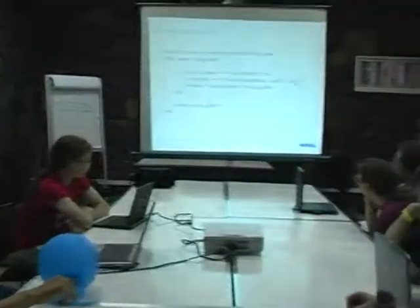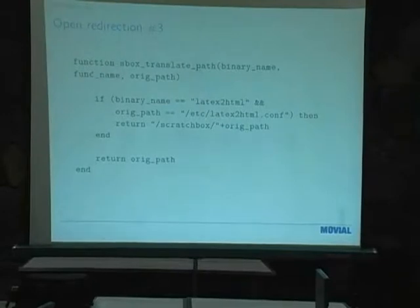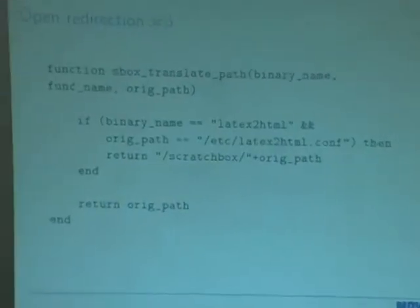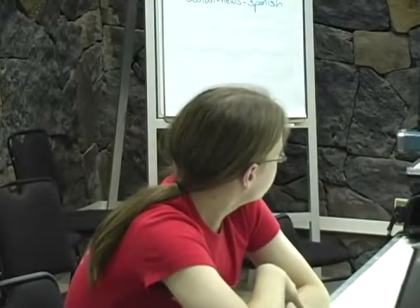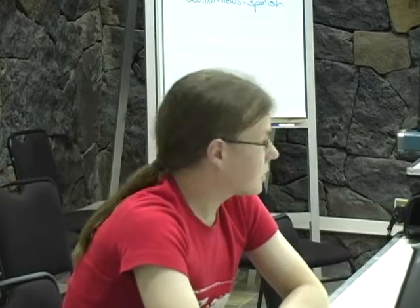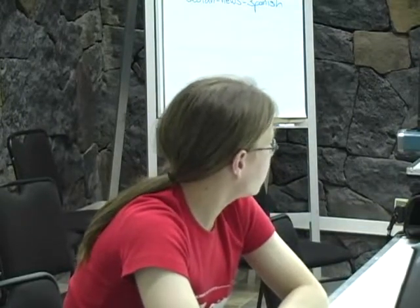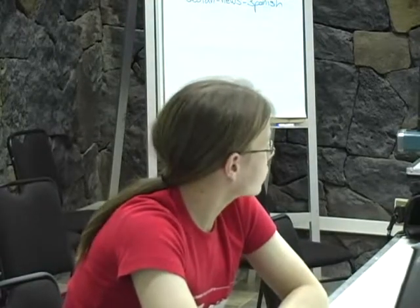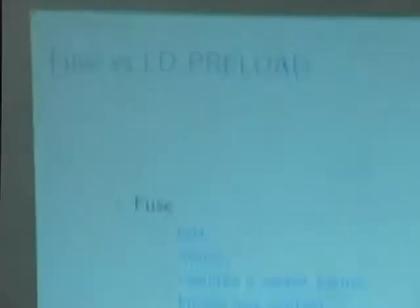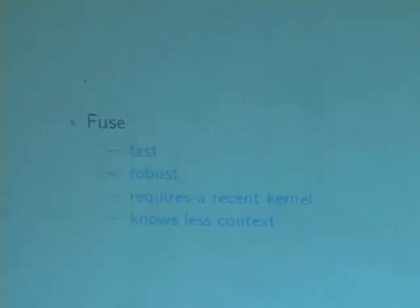Currently the wrapper — the FUSE engine — calls a function called SBOX_translate_path, which is the Lua entry point. It gets a binary name, and the function name is either the glibc function that handles the file, or in the FUSE engine case, it's one of the VFS level functions calling the file system. Lua has the nice property of being really lightweight and fast to start, so it doesn't add much overhead even in the LD preload case. To choose whether we want to use FUSE or LD preload, there are some pluses and minuses and we are not quite sure which one we will continue working on.